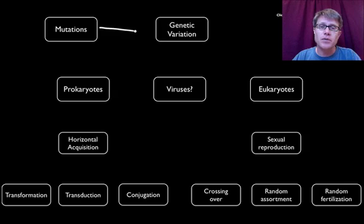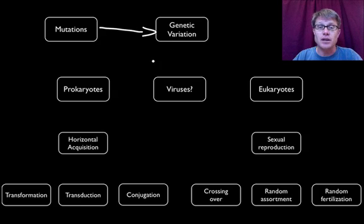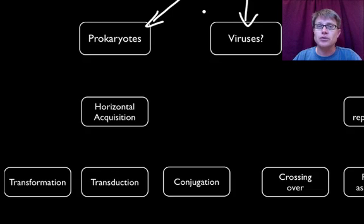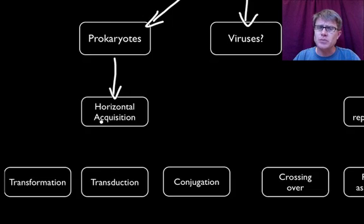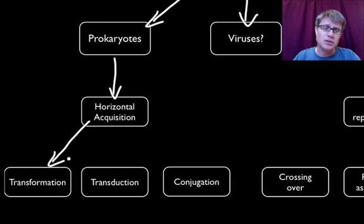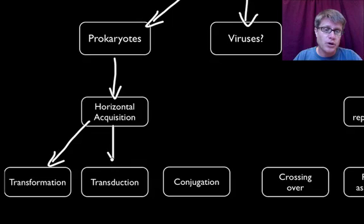So where does variation come from? How is it maintained is a better way to think about that. We can break life into two main types of maintaining genetic variation. In prokaryotes — bacteria and archaea — they show what's called horizontal acquisition. There's no sex; they use binary fission to reproduce, so variation comes from replication mistakes and sharing material horizontally from species around at the same time. Three processes are transformation, transduction, and conjugation.